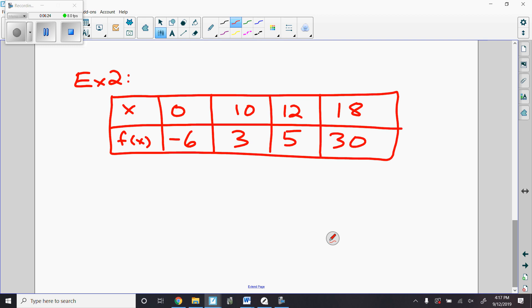So if I ask you to find the average rate of change of f on the interval [0,18], again, 0 is like a, 18 is like b.